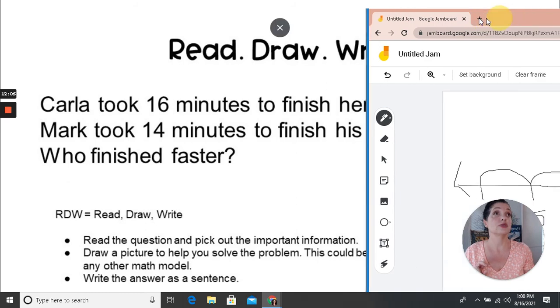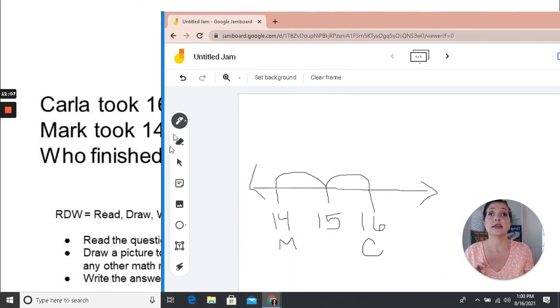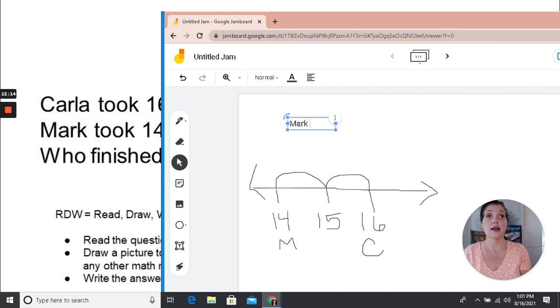So going back to our Jamboard, I'm clicking on the text tool. And I'm going to type, Mark finished two minutes faster than Carla.